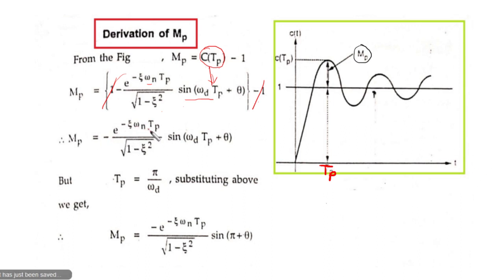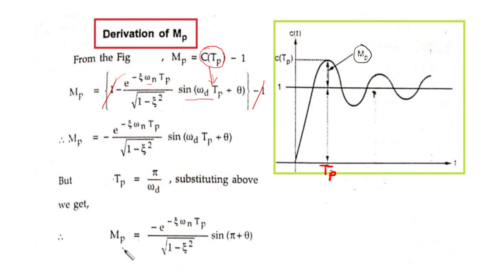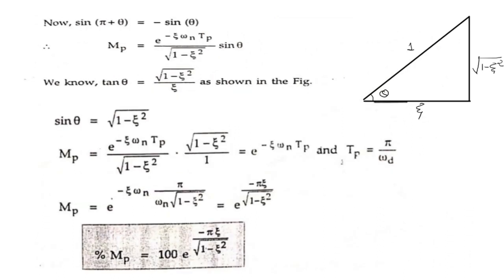So mp is equal to e raised to minus zeta·ωn·Tp divided by under root 1 minus zeta squared, times sine(ωd·Tp + θ). We know that the peak time Tp is equal to π upon ωd, which was derived in the last video. Substituting this value, mp becomes minus e raised to minus zeta·ωn·Tp divided by under root 1 minus zeta squared, times sine of — putting Tp = π/ωd — ωd and ωd cancel, leaving sine(π + θ).